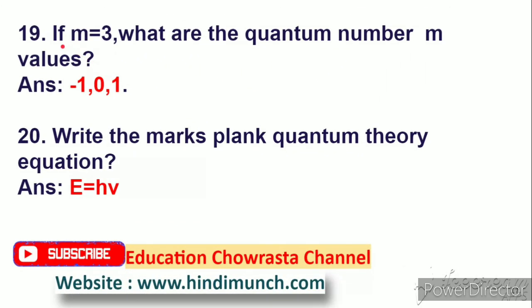Next question: if m is equal to 3, what are the quantum number m values? m ane thii 3 aeite, m yokka value seen tii. Answer: minus 1, 0, 1.